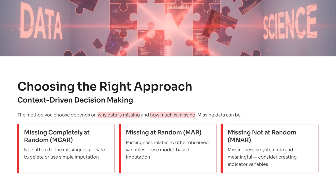Now, let's look deeper, because in real projects, context drives your decision. The method you choose depends on why the data is missing and how much of it is missing. This is what separates a junior data cleaner from a professional data scientist. There are three main types of missingness.